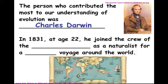Darwin was born in the 1800s. He and President Abraham Lincoln share the same birthday, which puts it in a time context. When he was 22 years of age, he had the opportunity of a lifetime to go on a voyage around the world. He was born in England and was a nature-loving kind of guy who spent a lot of time outdoors collecting bugs and things — he was kind of a nerd.